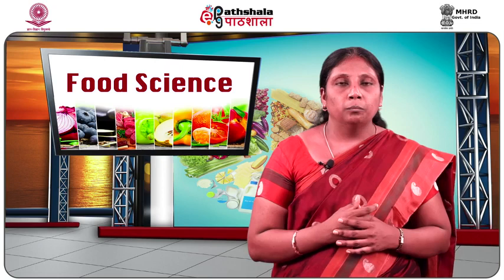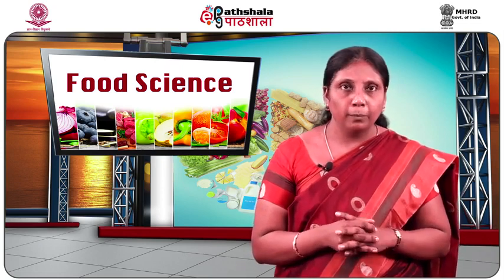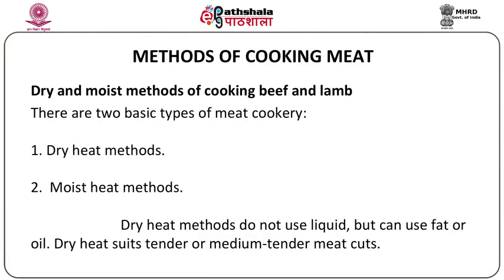Meat — beef and lamb — can be cooked by two methods: the dry heat methods and the moist heat methods. The dry heat methods are those which do not use liquid but only use air or oil as a medium of cooking. Dry heat methods are more suitable for the tender cuts of meat or the medium tender cuts. Less tender cuts of meat cannot be cooked by dry heat and can be made tender only by the moist heat methods.